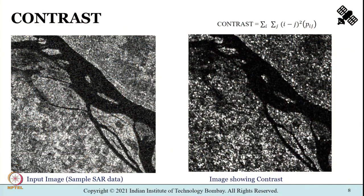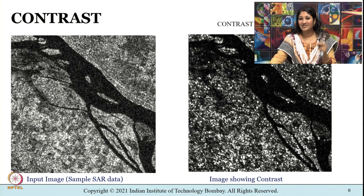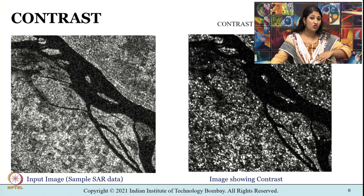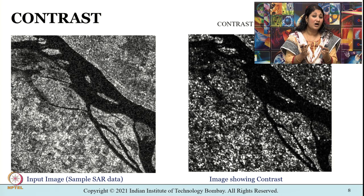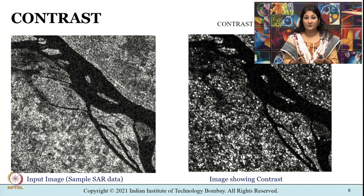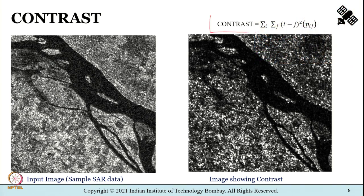Instead of just showing before and after images, let us understand how these textural features are computed. The contrast image is a Haralick texture feature which gives non-linearly increasing weight to transitions from low to high gray scale values. Contrast is nothing but the amount of local variations present in an image. Mathematically, contrast is represented as: summation over i and j of (i minus j) squared times p(i,j), where i and j represent the row and column addresses.